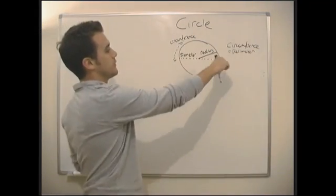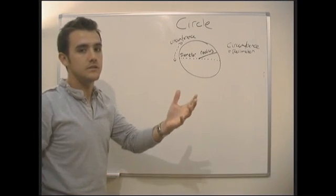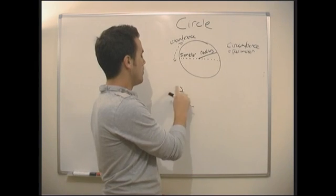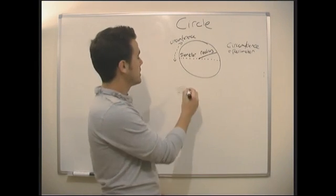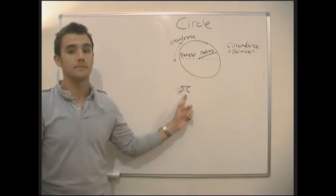Now, if we wanted to work out the circumference of the circle, we'd need the help of a special number called... Oh, that's a very poor attempt, right? A special number called pi, which looks something like that.